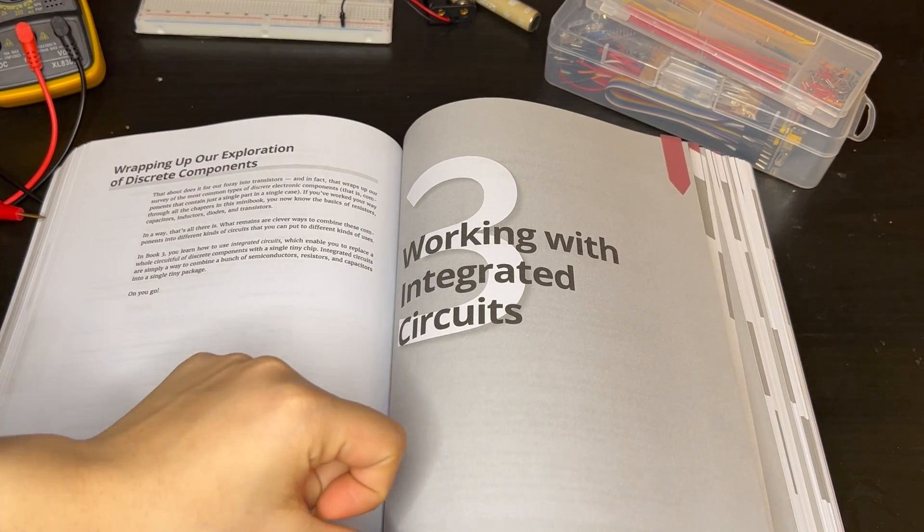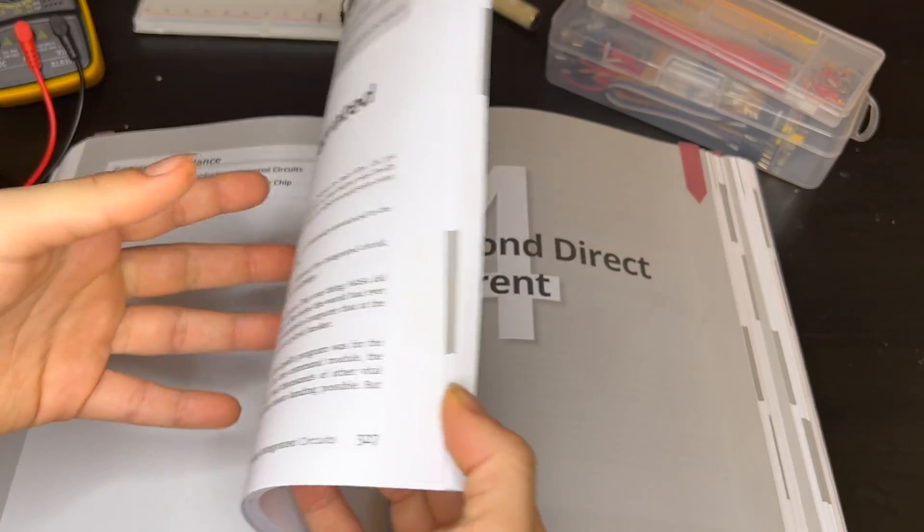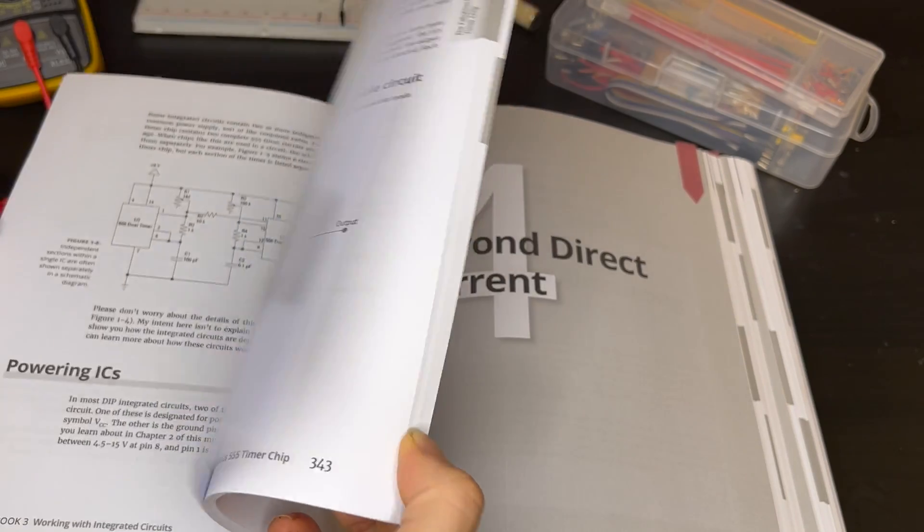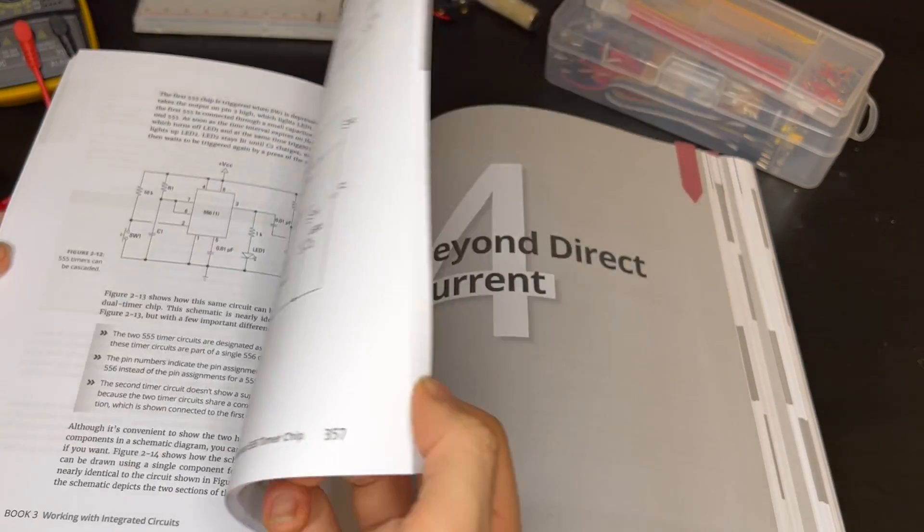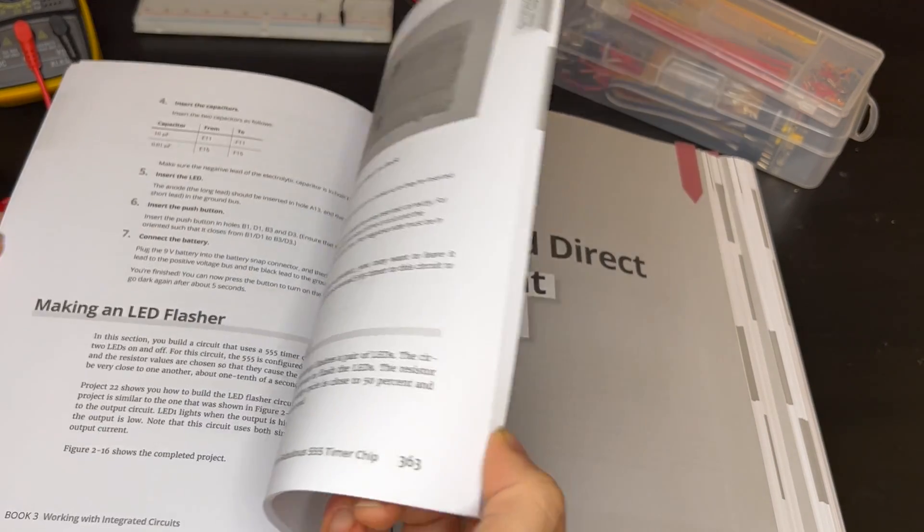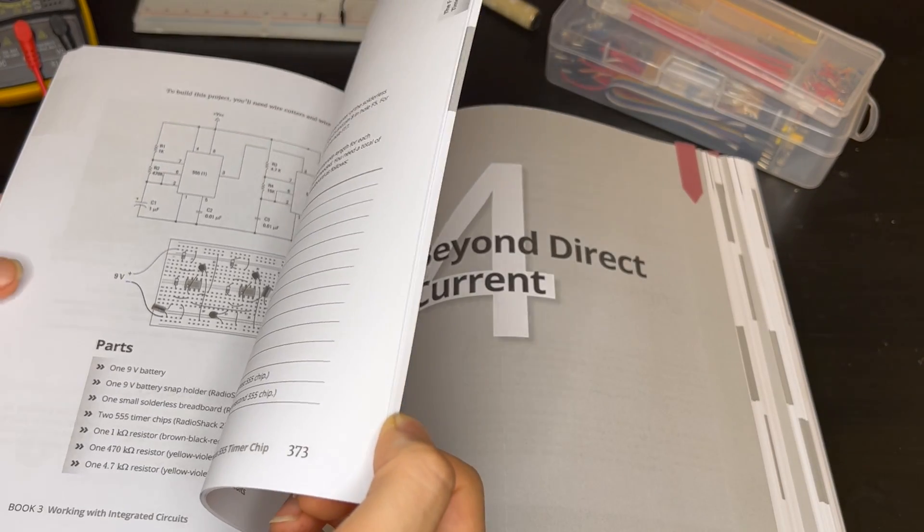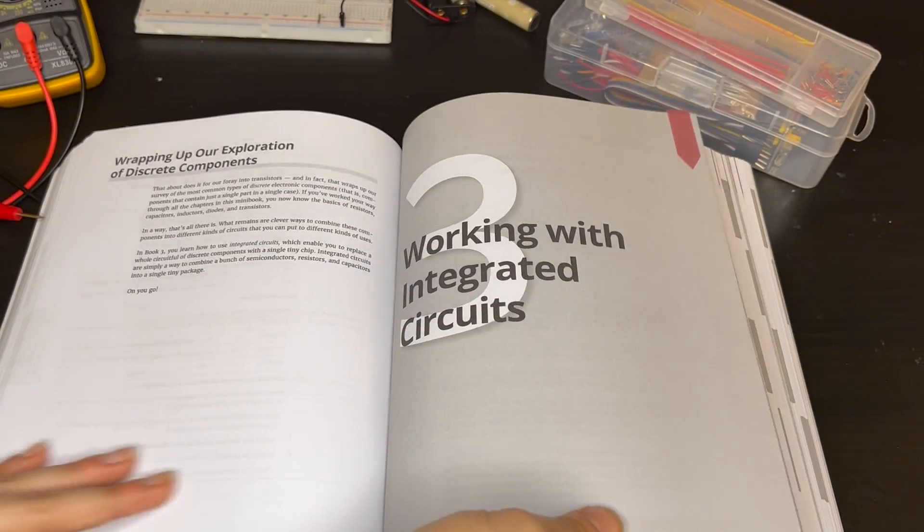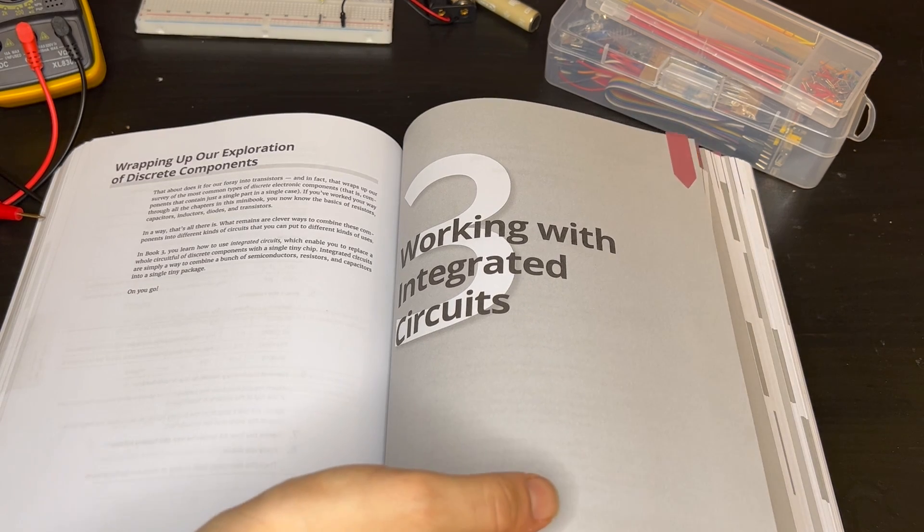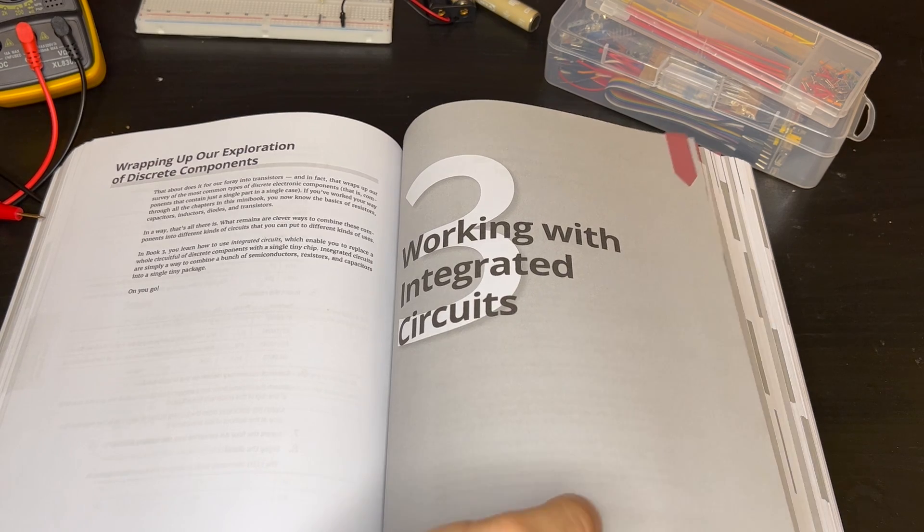Book Number Three introduces integrated circuits with many projects using timer integrated circuits and operational amplifiers. By the end of this book, you'll understand what integrated circuits are and complete projects with two of the most common integrated circuits.